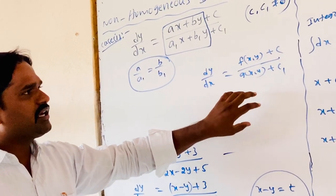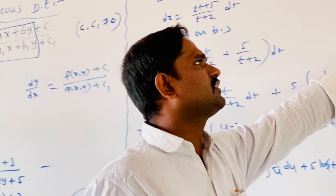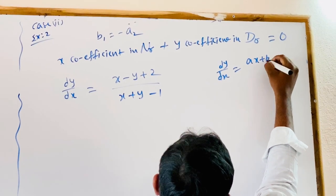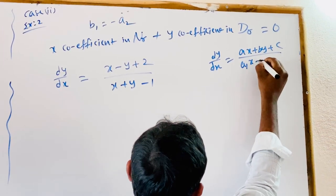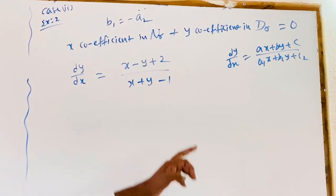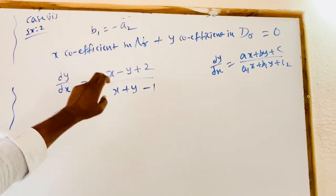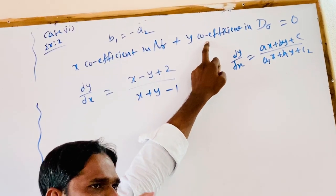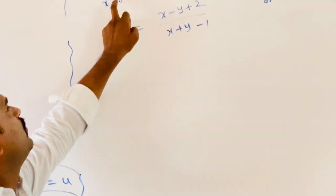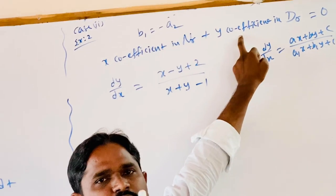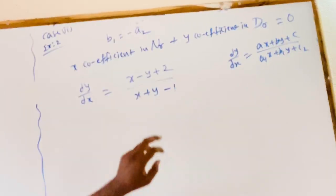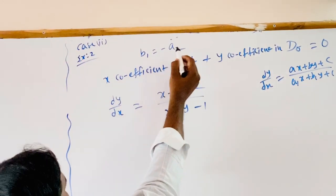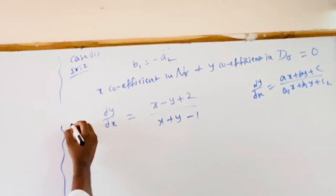There is another condition in non-homogeneous differential equations, known as Case 2. In the general equation dy/dx = (ax + by + c) / (a1x + b1y + c1), we observe numerator and denominator coefficients. If the x-coefficient of the numerator plus the y-coefficient of the denominator equals zero, or the x-coefficient of the denominator plus the y-coefficient of the numerator equals zero, then we use Case 2. The condition is: b1 = −a or a1 = −b.